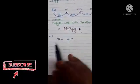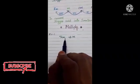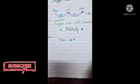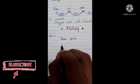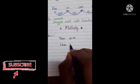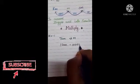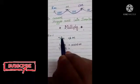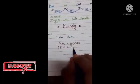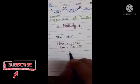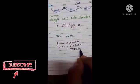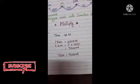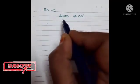For example, convert 7 kilometers into meters. For kilometer to meter, the relationship is 1000 — one kilometer is 1000 meters. So seven kilometers: we multiply 7 by 1000, and we get 7000. Therefore, 7 kilometers is equal to 7000 meters.